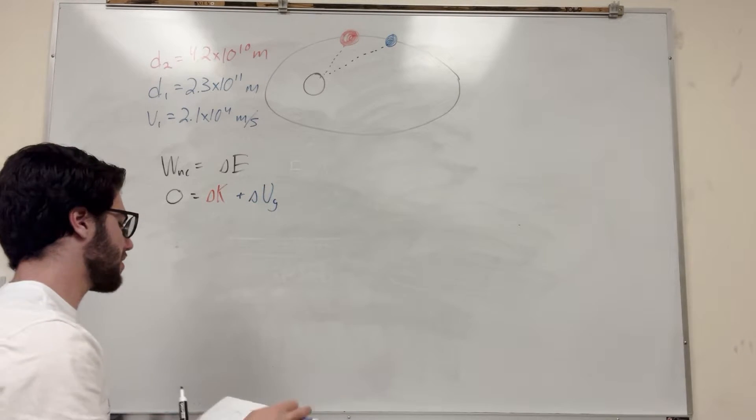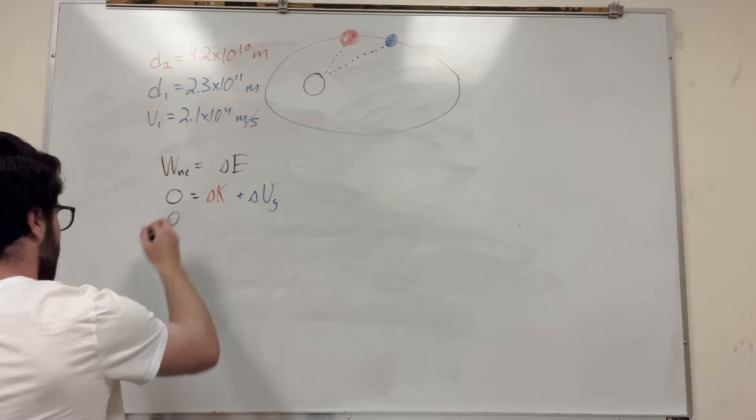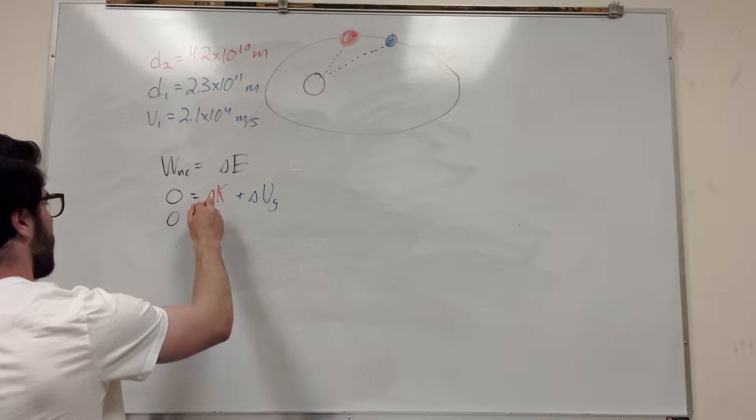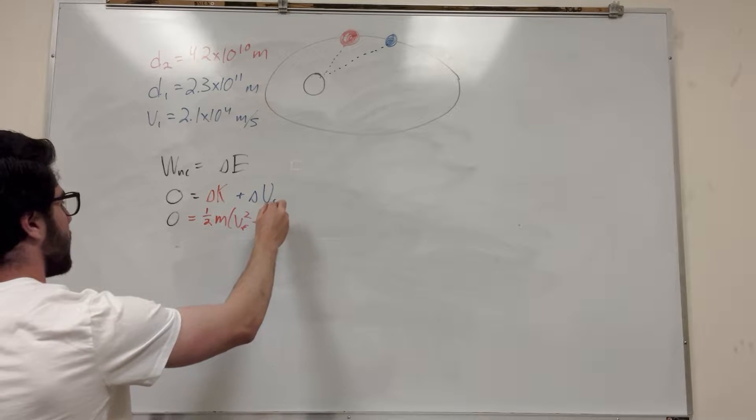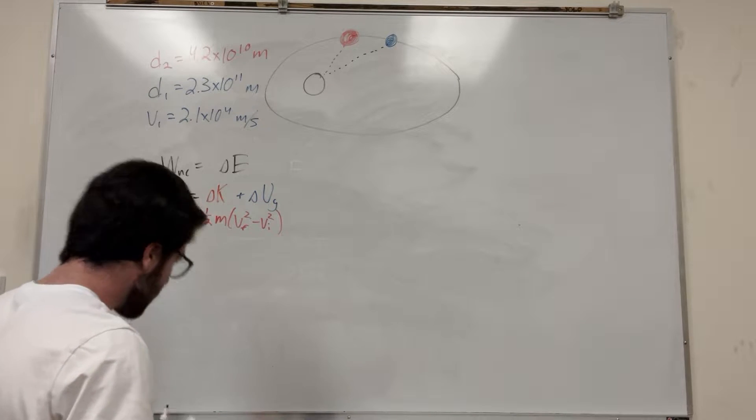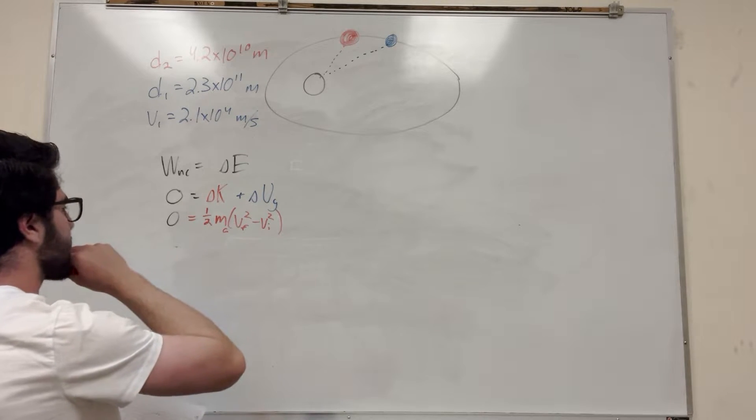So let's expand this out some more, right? Zero is going to be equal to, so it's going to be one half mass, and then velocity final squared minus velocity initial squared. And this is the mass of the comet, right? So I'm going to label that C, mass of comet.